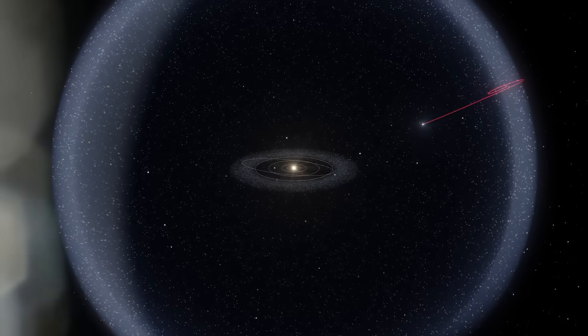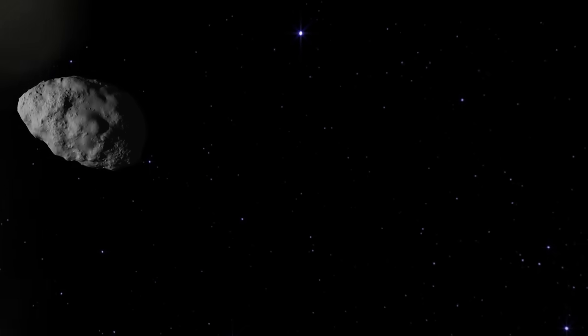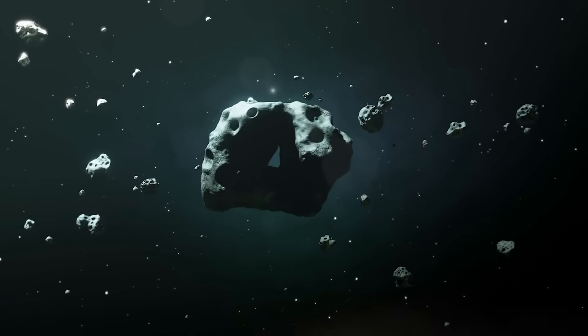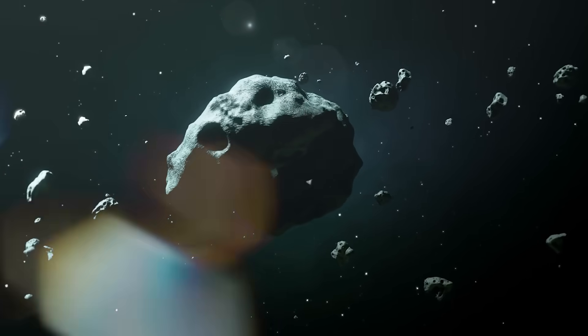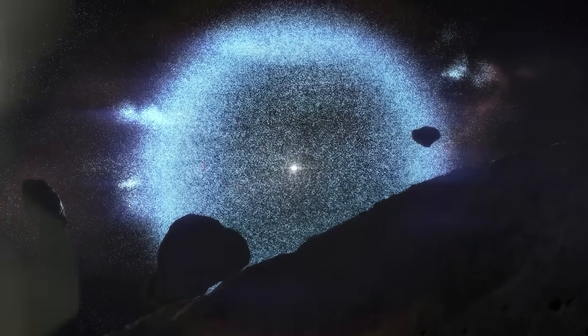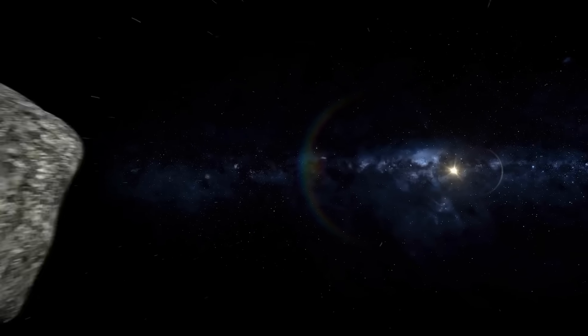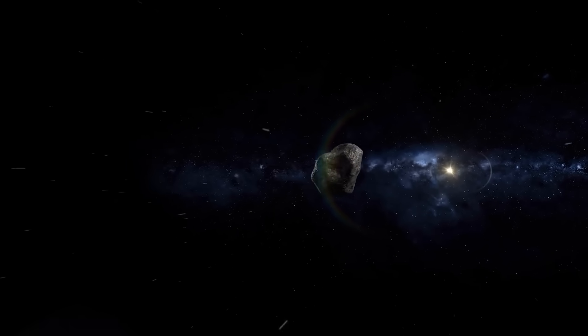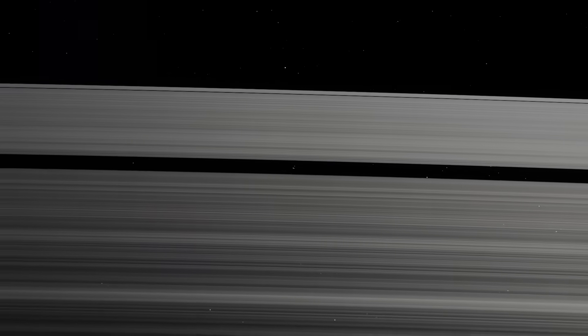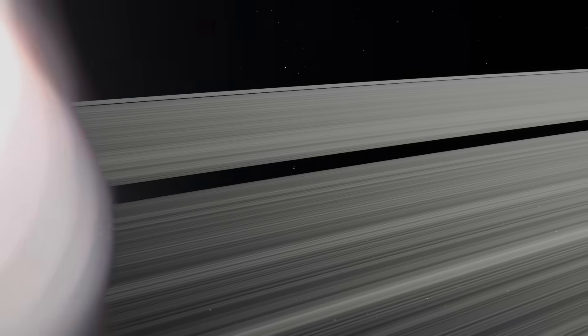The James Webb Space Telescope was built to look outward—to trace the earliest stars, decode the origins of galaxies, and pull back the curtain on cosmic time. But what it found instead was something here, now, and possibly watching back. Not at the edge of the universe, but crossing through our cosmic doorstep. An object too perfect to be random, too silent to be ordinary, and too timely to be coincidence.